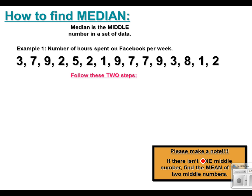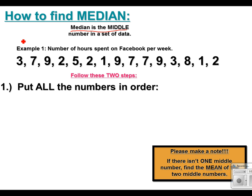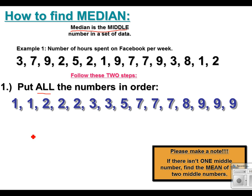The median is the middle number. Finding the median is also a two-step process. One thing that's really important when you find the median is you put them all in order. You might as well put them in order when finding mean too, and then add them up — that way you've done two steps at once. Put all the numbers in order, including repeats. So you've got: one, one, two, two, two, three, three, five, seven, seven, seven, eight, nine, nine, nine.